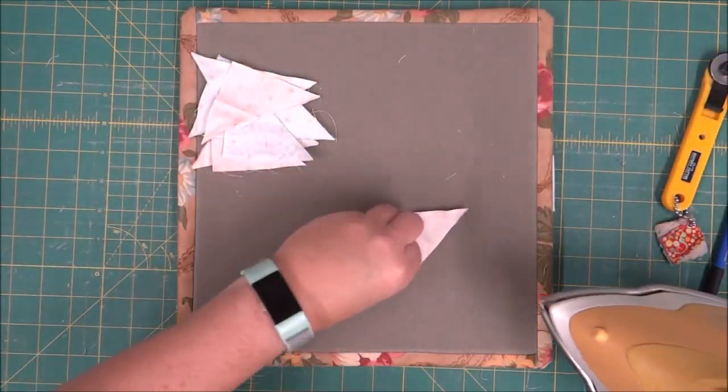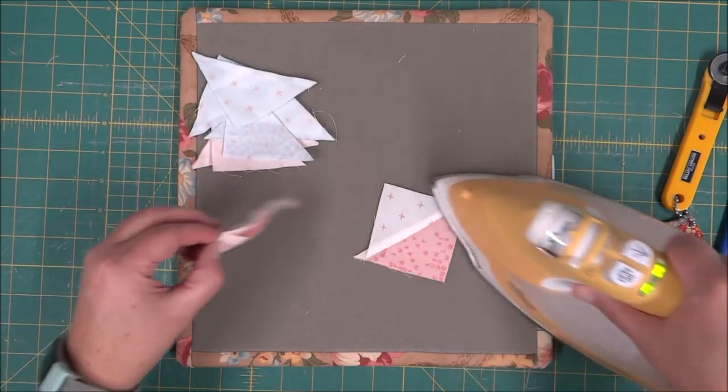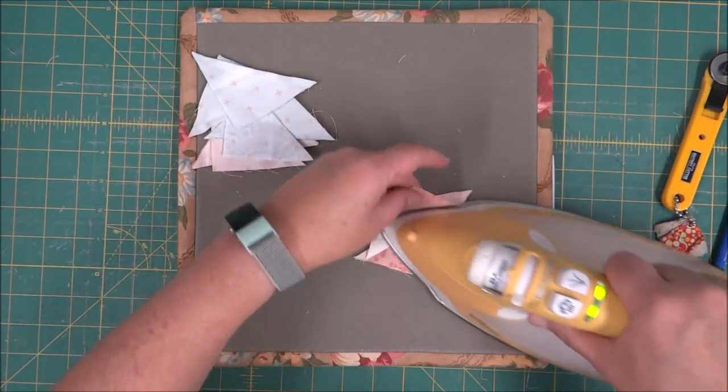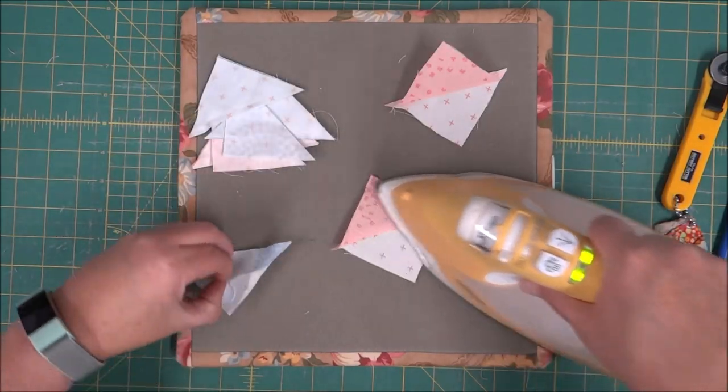Once they are cut apart, what we're going to do is open them up and give them a good press. We'll want to press it to the dark side that hides the seam and the fabric.